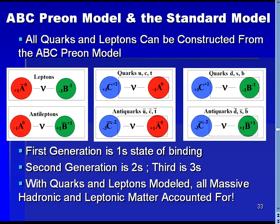This is a very important point, since it is well known that the standard model is capable of modeling all known particles. Since the ABC-prion model is capable of modeling all quarks and leptons, this shows that the ABC-prion model is also capable of modeling all known particles.